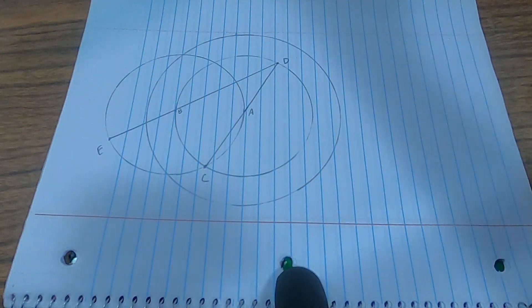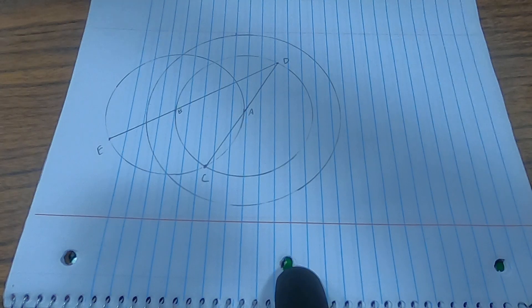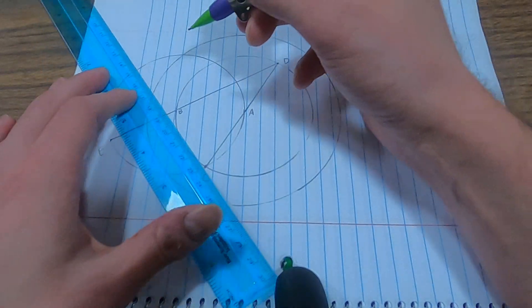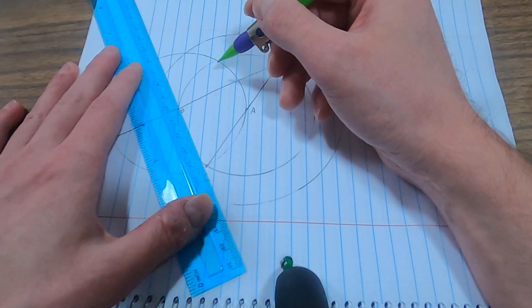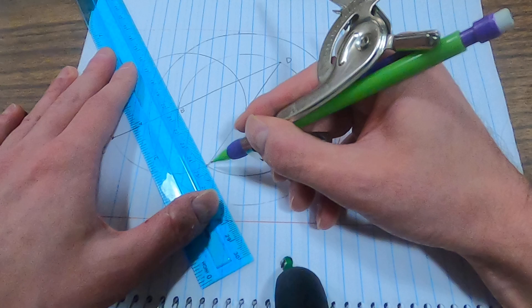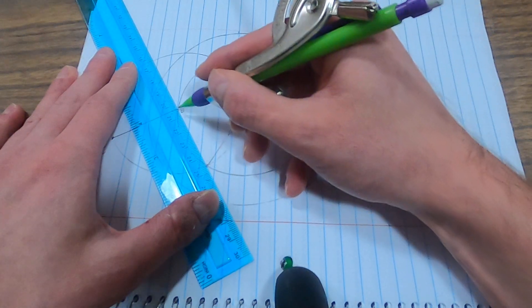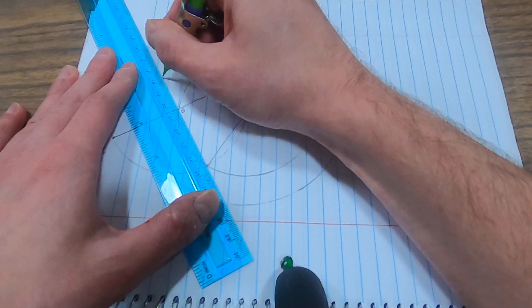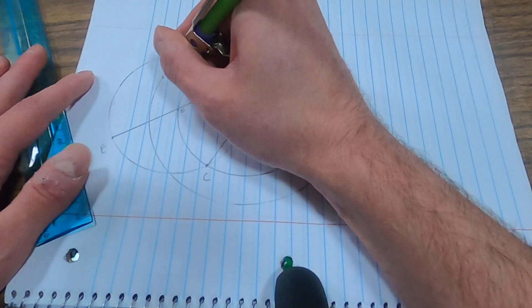Now, the reason why is because I'm going to take my ruler, I'm going to draw a line through CB. And I don't actually need to draw the line itself, I can just find an intersection point. So I have my ruler along CB here, and then where that line would intersect this bigger circle, I'm going to make a point and call that F.